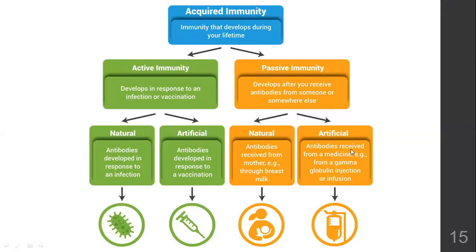Artificial passive immunity is when you get immunoglobulin injections — different from vaccination. In vaccination, you are injecting viruses inside your body, but in immunoglobulin injections, you are injecting artificially made antibodies extracted from somebody else's blood, made into sterile injections and given to others. These are antibodies you receive from medicine — a gamma globulin injection given to somebody who is sick. That is artificial passive acquired immunity.